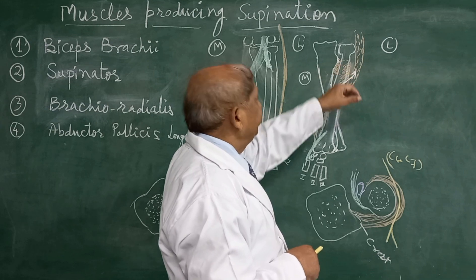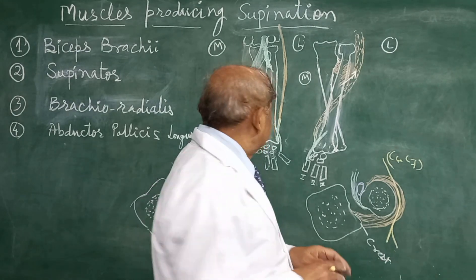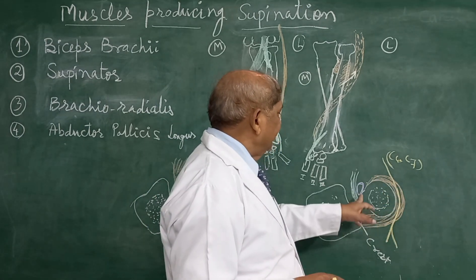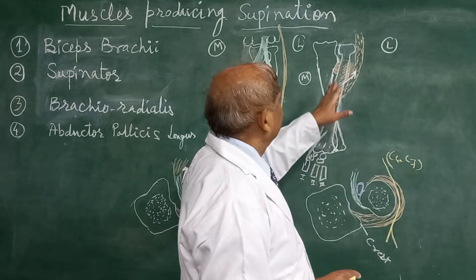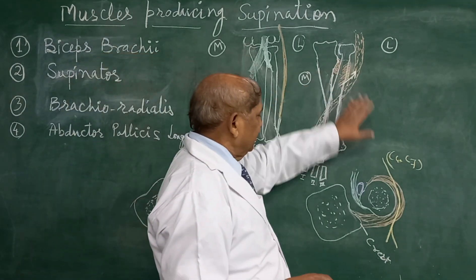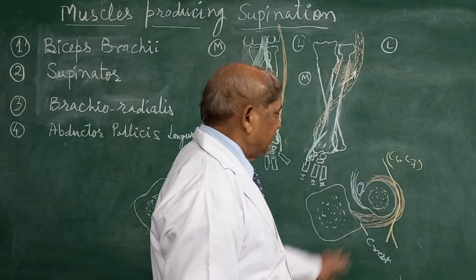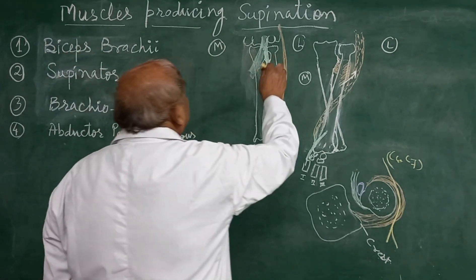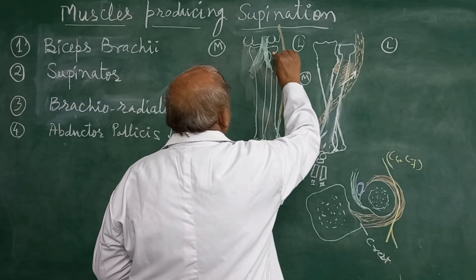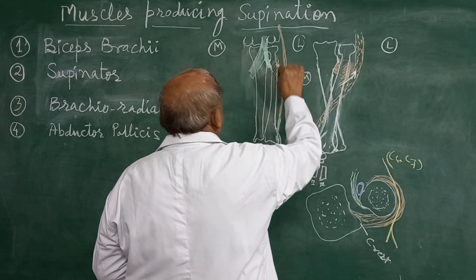These supinator fibers run towards the radius. They will cover first the posterior surface, then the lateral surface, and then they will cover the anterior surface of the radius. So they will be covering the surfaces of the radius — the supinator muscle is attached onto the posterior, lateral, and anterior surface of the upper end of the radius. This muscle comes from behind, and after taking origin will form an oblique insertion.